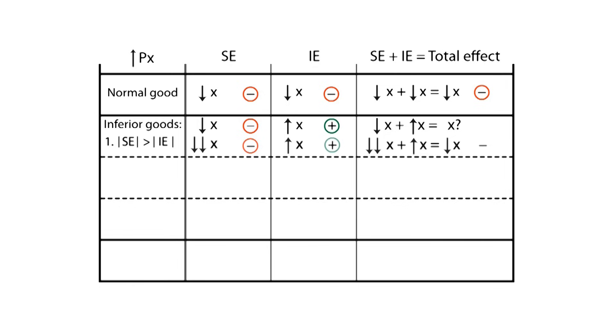In those inferior goods where the absolute value for the income effect is higher than the absolute value of the substitution effect, the total effect will be positive. This type of inferior goods is known as Giffen goods.